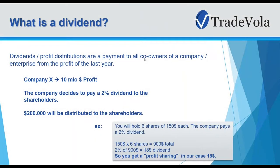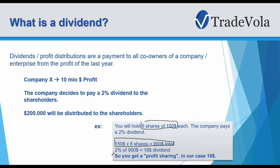What is a dividend? A dividend is a profit distribution as a payment to all co-owners of a company. For example, if a company has 10 million dollars profit and the CEO decides to pay a 2% dividend, 200,000 dollars will be distributed to shareholders. If you hold 6 shares at $150 each, that's $900 total, and 10% of $900 is $18 in dividends.